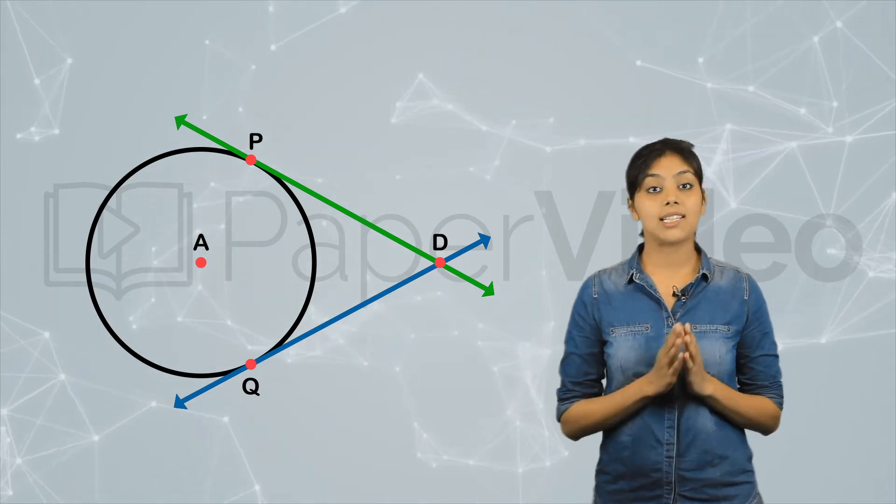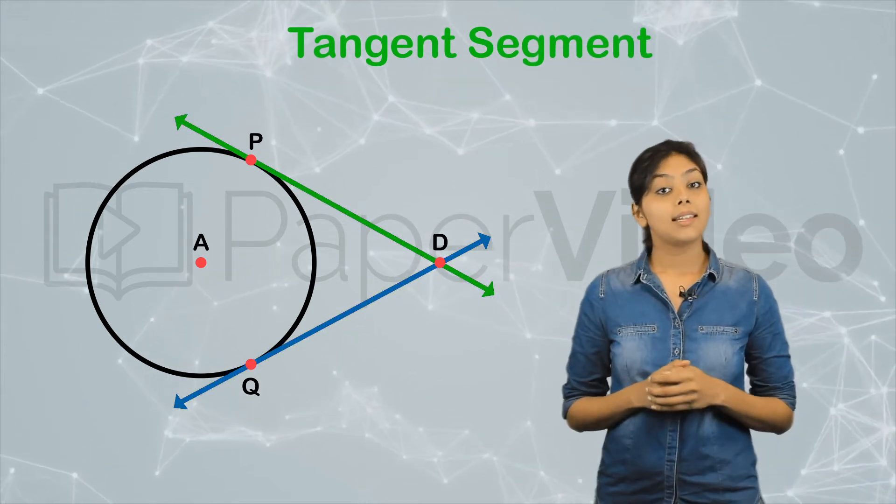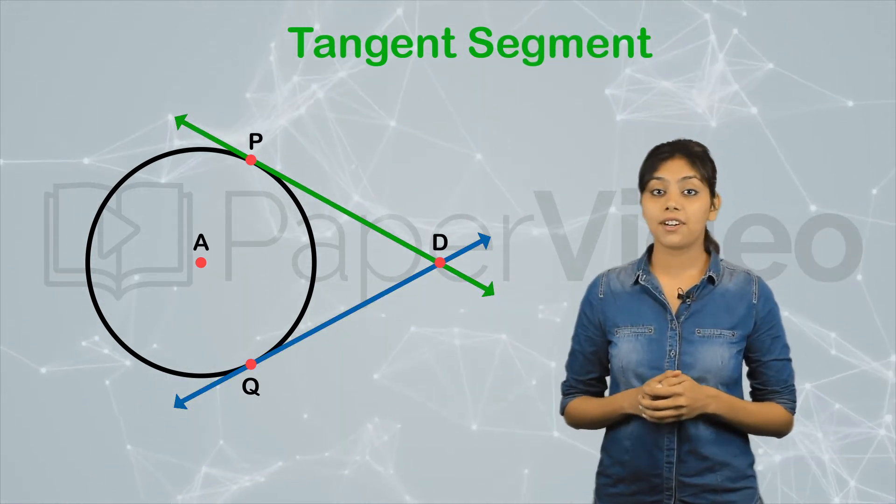Then segments DP and DQ are known as the tangent segments. Now that we have understood the meaning of a tangent segment,